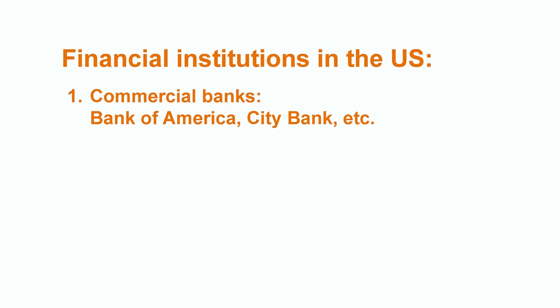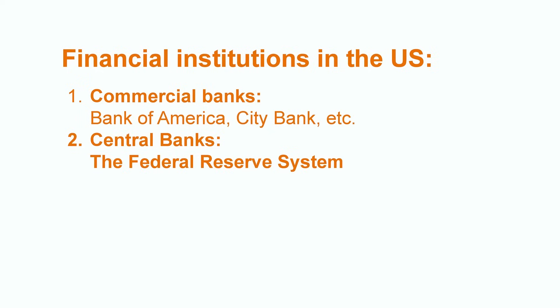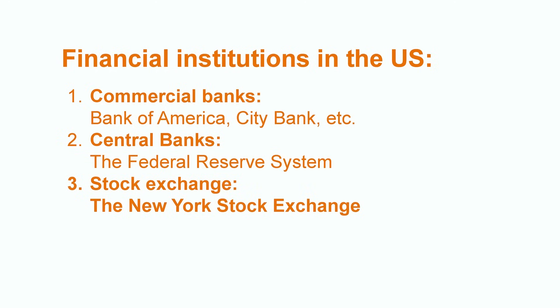The US financial system is made up of many types of financial institutions. There are commercial banks — for instance, Bank of America or Citibank — where households and firms store their money and receive loans. There is a central bank, which in the US is called the Federal Reserve System. It runs the financial system and guarantees its stability, for example by lending money to commercial banks. Another example is the New York Stock Exchange, which provides access to financial markets where savers can directly fund borrowers.